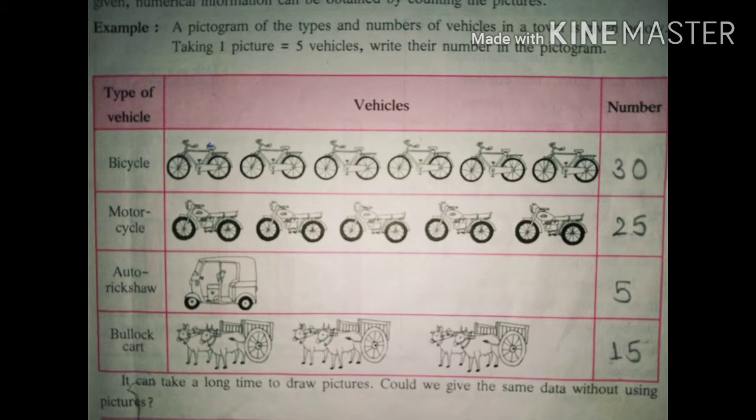How many bicycles are there? Here, we know that 1 picture equals 5 vehicles. So, there are 6 bicycles. 6 times 5 equals 30. So there are 30 bicycles in that town.